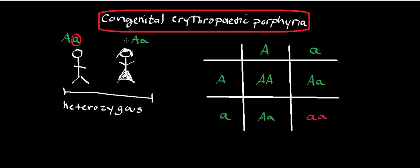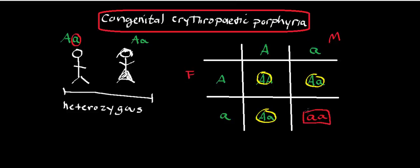The typical example given is if you have two heterozygous parents, you do a Punnett square with the mother and father. You find that one child will be homozygous dominant — neither an expressor nor a carrier of the disease. There's a 50% chance of a child being heterozygous, meaning they won't express the disease but will be a carrier, just like their parents. And there's a one-fourth chance of having a child who expresses congenital erythropoietic porphyria — homozygous recessive for the disease alleles.